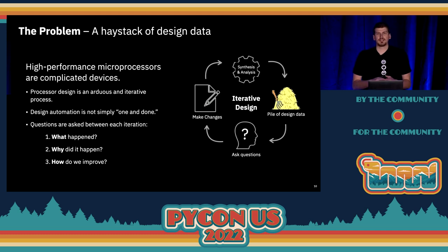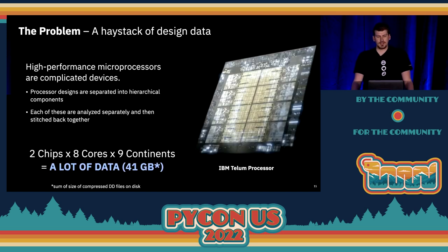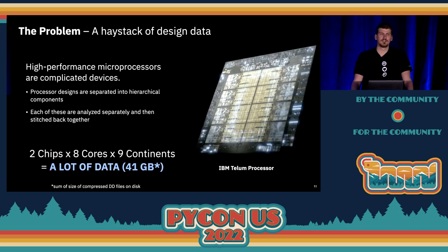This design process is not simply one and done. It requires multiple iterations where an engineer makes some changes, runs the new design through the synthesis and analysis workflow, which ends up generating a large pile of data and leaves our engineer with many questions: what happened, why did it happen, and how do we improve the design for next time? These processors are so complicated we can't analyze them all in one shot — we have to break the single design up into multiple hierarchical components, each of which are analyzed and optimized separately. We as engineers need to stitch that back together so that we can think of it as a single entity, and each iteration ends up generating a lot of data.